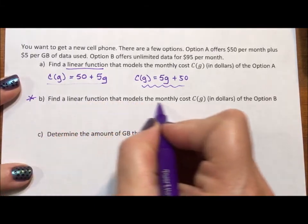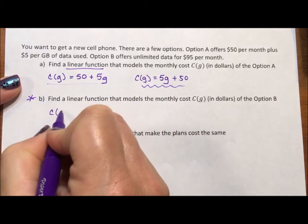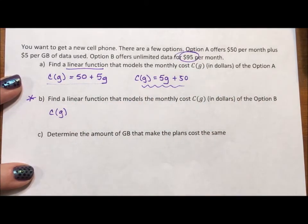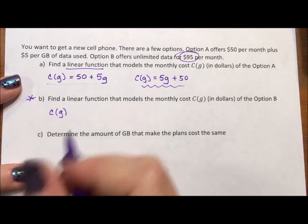So find a linear model that models the second one. Okay, it's $95 per month. That means the slope is zero. It means we have a horizontal line.